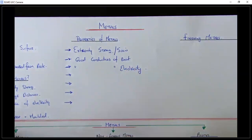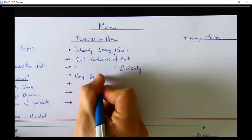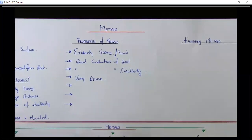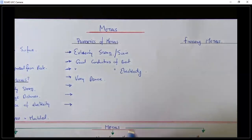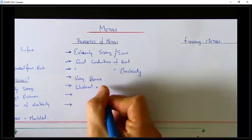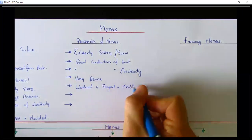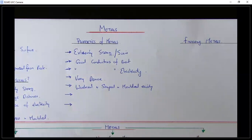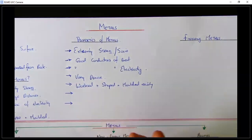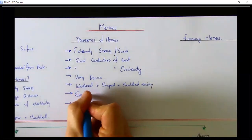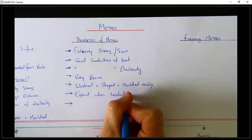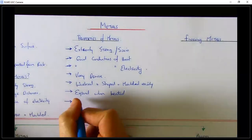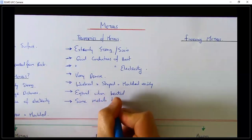Metals are very dense — depending on what you're designing or making, that might be a requirement. When you think of things that need a lot of weight in them, metal is a very good solution. They can also be worked and shaped fairly easily — a lot of them, especially leads and lighter metals, have a lot more flexibility. Another property is that metals expand when they're heated, which you may have come across in science. And lastly, some metals bend easily.